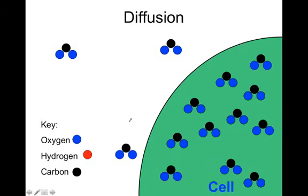Here we have diffusion again. The difference is now we have a carbon atom bonded to two oxygen atoms, which is CO2. A common misconception students have is that diffusion moves one way, either into or out of a cell. That really doesn't matter.